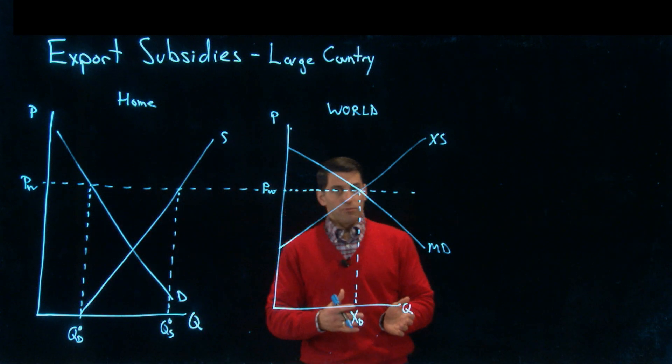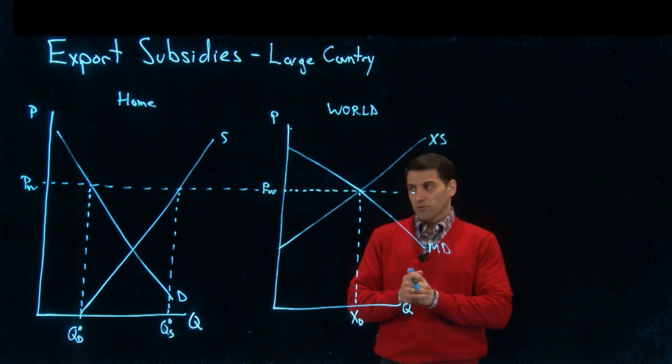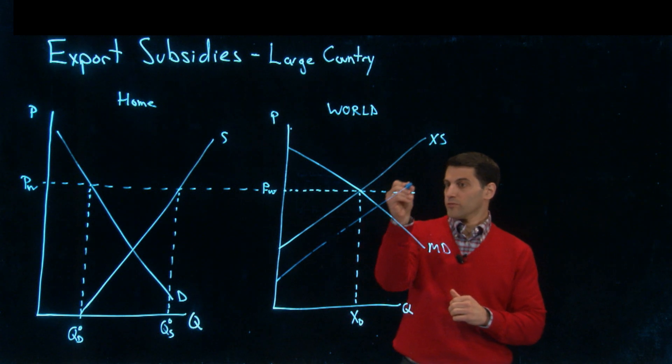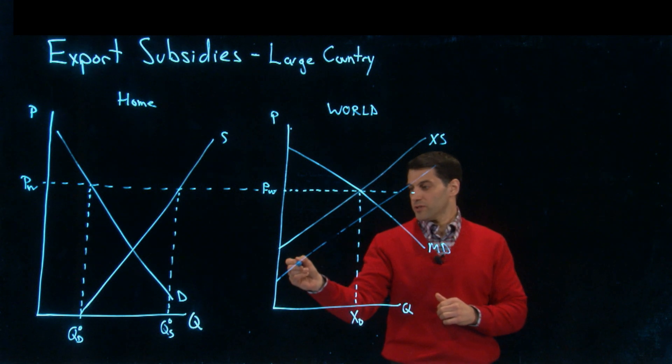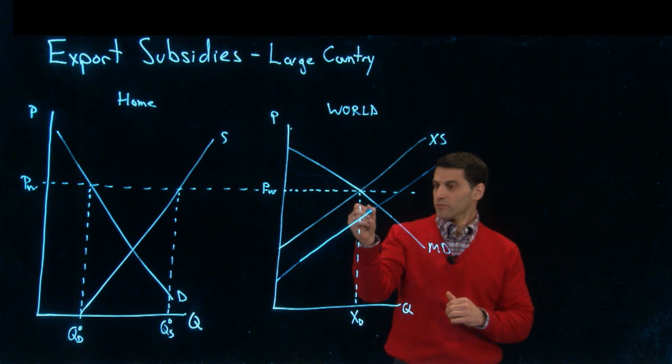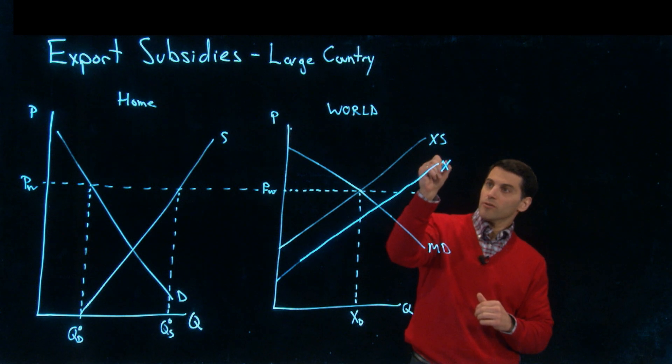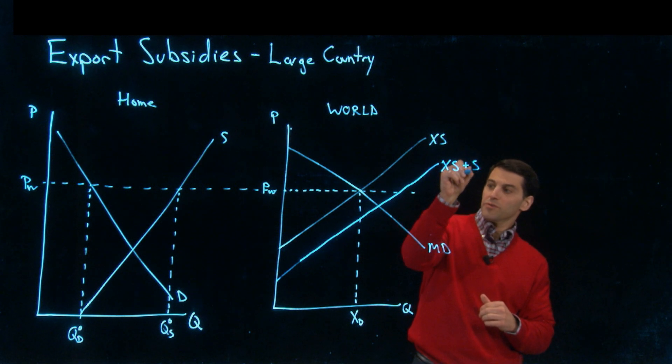Now we're going to put in an export subsidy. What is that going to do? It's going to shift the export supply curve down. Here is our export supply curve with the subsidy.